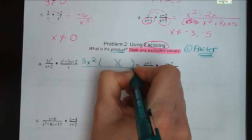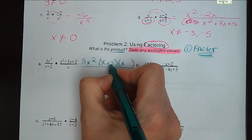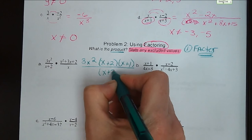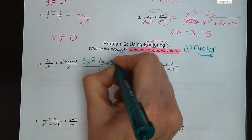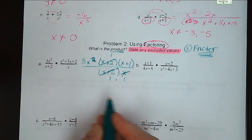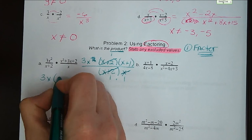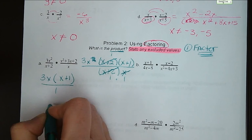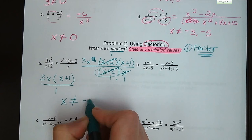So x squared plus 3x plus 2 is going to be x plus 2 times x plus 1 — finding products of 2 that add up to 3. Our denominator, we have x plus 2 and we have an x. Now let's go through and start canceling. Our two x plus 2s cancel out, and we can cancel out one of our x's. We're left with 3x times x plus 1 over 1. And x cannot equal negative 2 or 0.